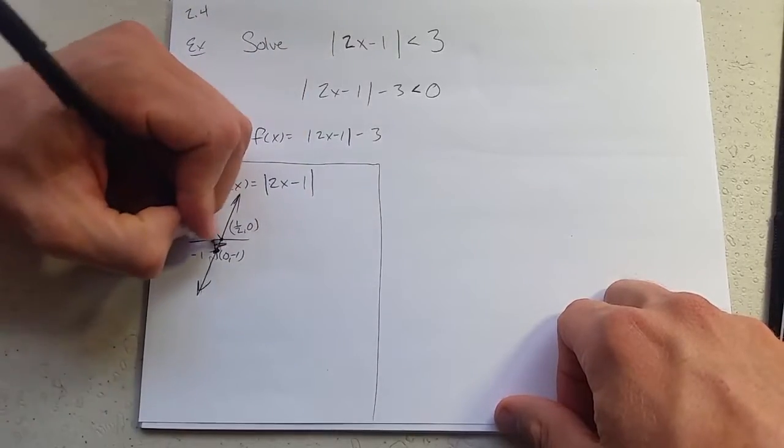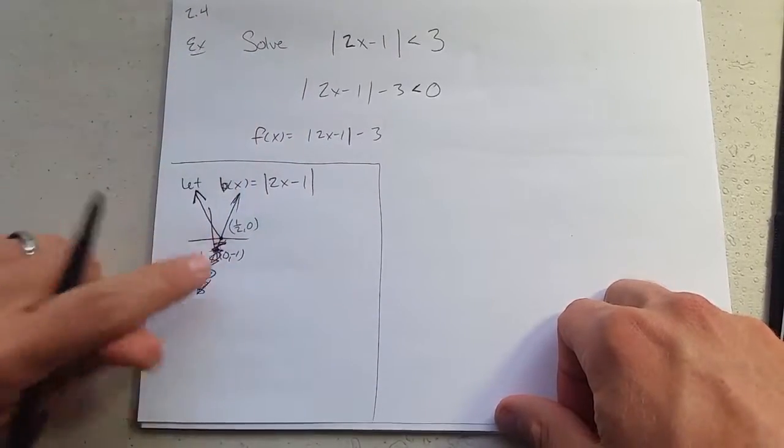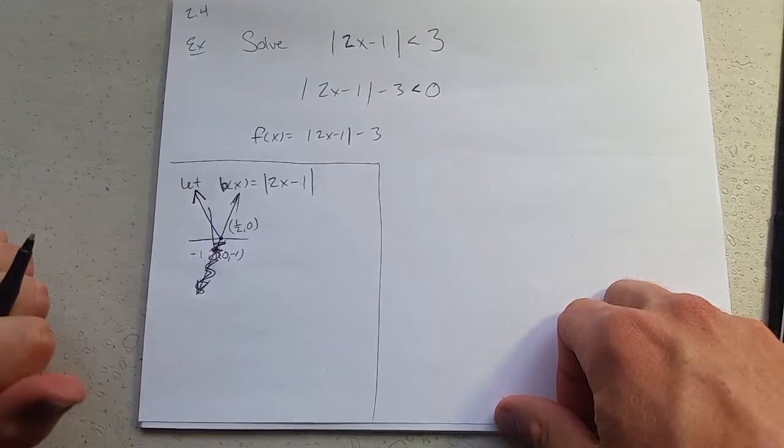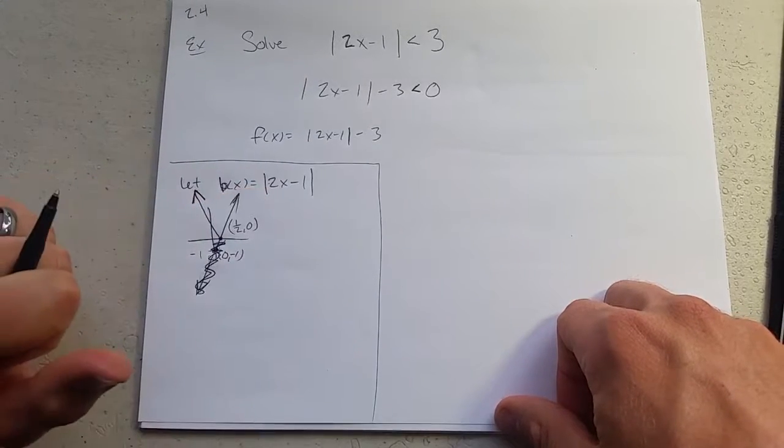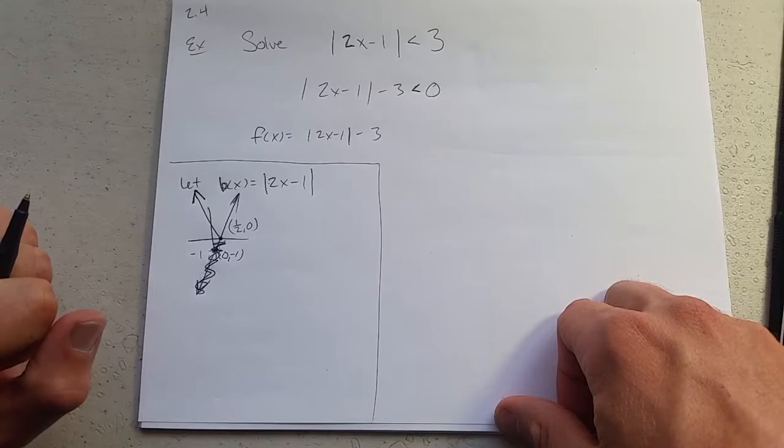So if I change to an absolute value, I'm throwing away all this part, and I'm going to make it positive instead. So there is 2x minus 1 absolute value graph right here.